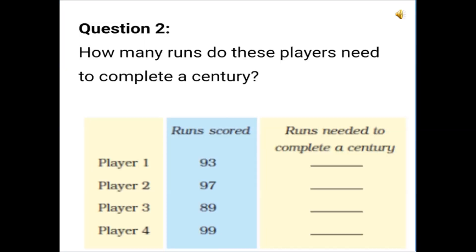Now look at the screen. We have 4 players and we need to find out how many more runs they need to complete a century. Player 1 has scored 93 runs. So how many more runs does he need? 94, 95, 96, 97, 98, 99, 100. You are right! 100 minus 93 is equal to 7. He needs 7 more runs.